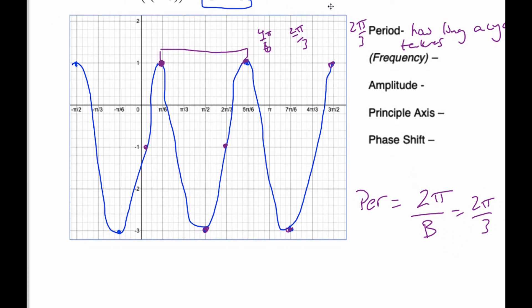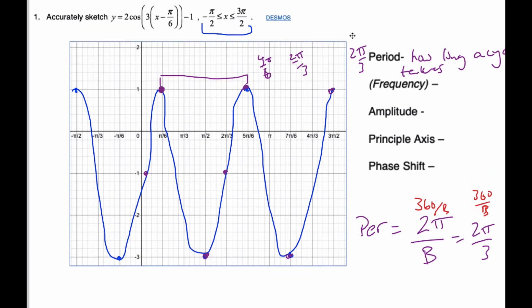This is if it's in radians. If you're working in degrees, it is 360 divided by b, it would be 360 over 3. So the period would be 120, which is what 2 pi by 3 actually is. And so that is the period. This is a handy little formula to hang on to. It is quite common to see.